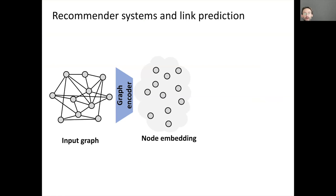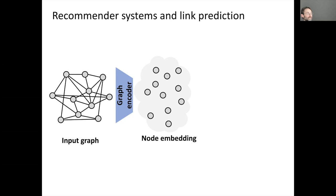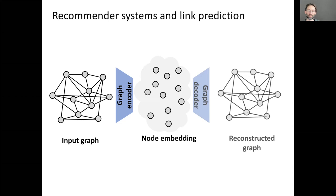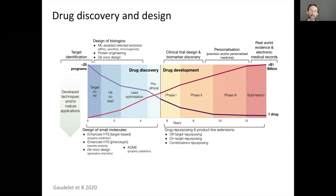At Twitter, GNNs can be applied to many problems: both text and images, plus the graph of public interactions like the follow graph and engagement, as well as non-public signals like suspicious IP addresses potentially linked to troll farms. One classical application is the recommender system, framed as link prediction: embed a follow graph so that similarity between embeddings is proportional to edge probability. This can be trained self-supervised by reconstructing the graph, and used to suggest who a new user might like to follow.